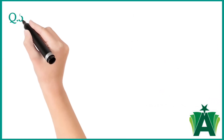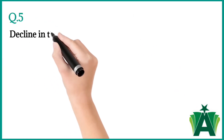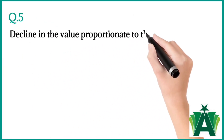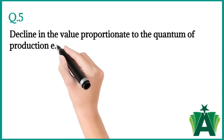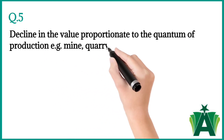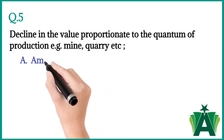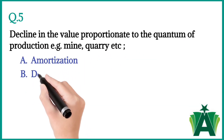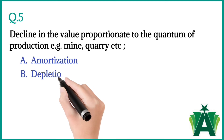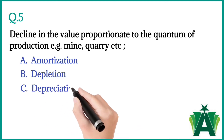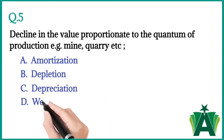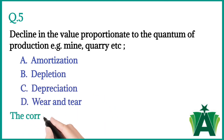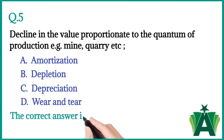Question number five: Decline in value proportionate to the quantum of production, e.g. mine, quarry, etc. — a) amortization, b) depletion, c) depreciation, d) wear and tear. The correct answer is b) depletion.